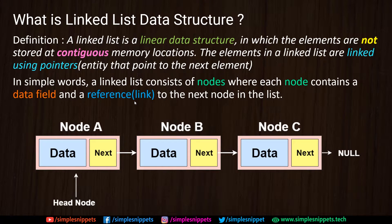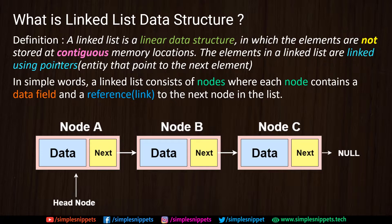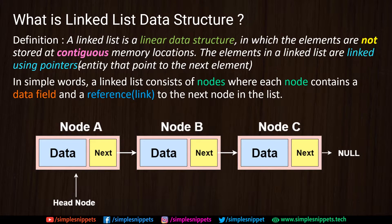A linked list is a linear data structure in which elements are not stored at contiguous memory locations. Just like stack and queue, linked list is a linear data structure. However, the key point to note is that the elements are not stored at contiguous memory locations, which means they are not stored right beside each other in memory. The elements in the linked list are linked using pointers, or some entity that points to the next element.